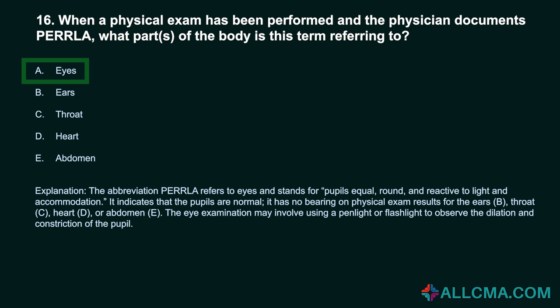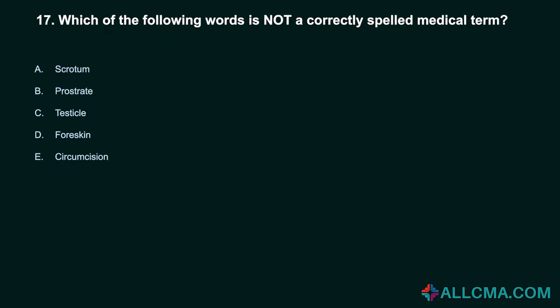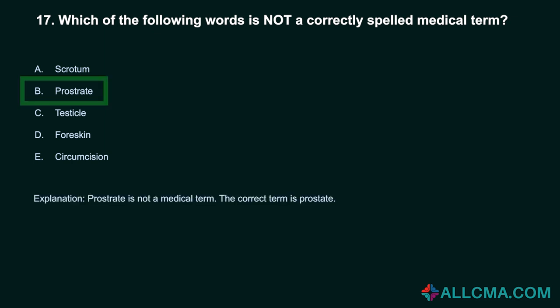Question 17: Which of the following words is not a correctly spelled medical term? A. Scrotum. B. Prostrate. C. Testicle. D. Foreskin. E. Circumcision. Correct answer: B. Prostrate. Prostrate is not a medical term. The correct term is prostate.